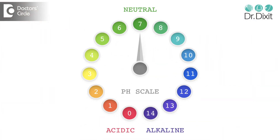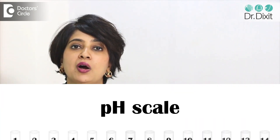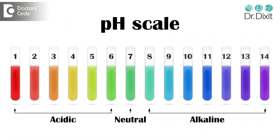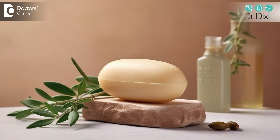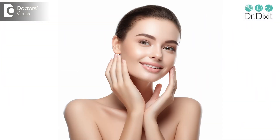When we talk about pH, we are talking about whether a product or a surface or a solution is more acidic or more alkaline. When it is 7, it is supposed to be neutral. Water has a pH of 7. Anything above 7 is supposed to be alkaline — most of our soaps are alkaline — and anything lower than 7 is supposed to be acidic. The skin has an acidic pH.